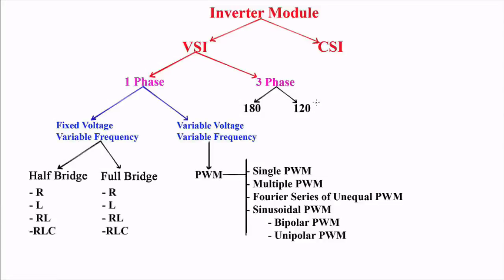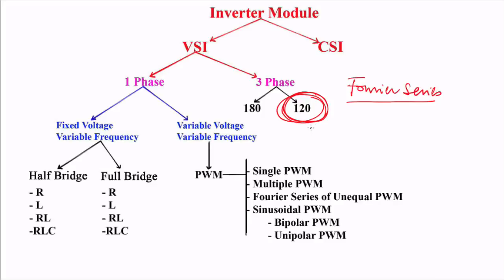Welcome to GetMatic. In the previous lecture we covered the three-phase inverter in 120-degree conduction mode, plotted the waveforms of line voltage and phase voltage, and derived the line voltage RMS value, phase voltage RMS value, and thyristor RMS current. In this lecture we will find the Fourier series expression of line voltage as well as phase voltage in the three-phase inverter in 120-degree conduction mode.